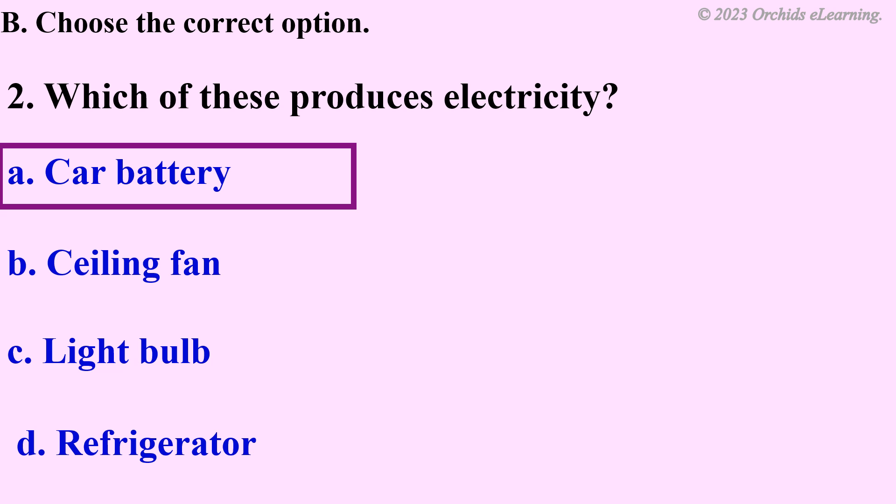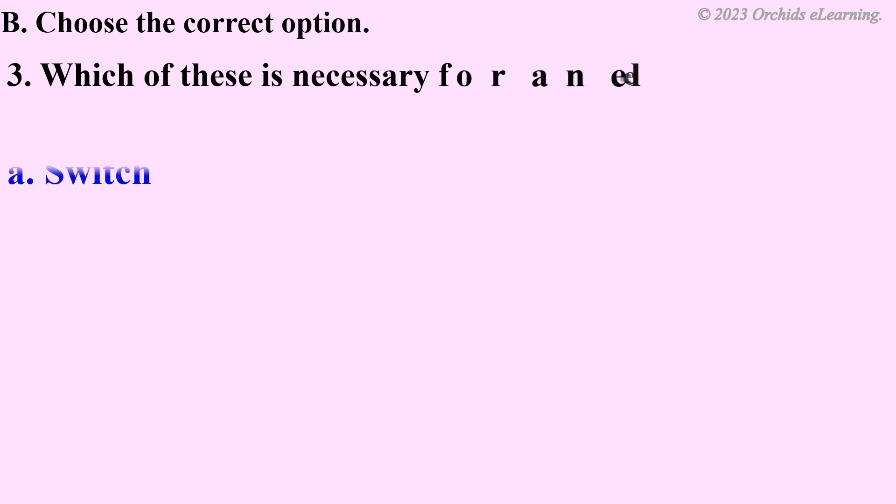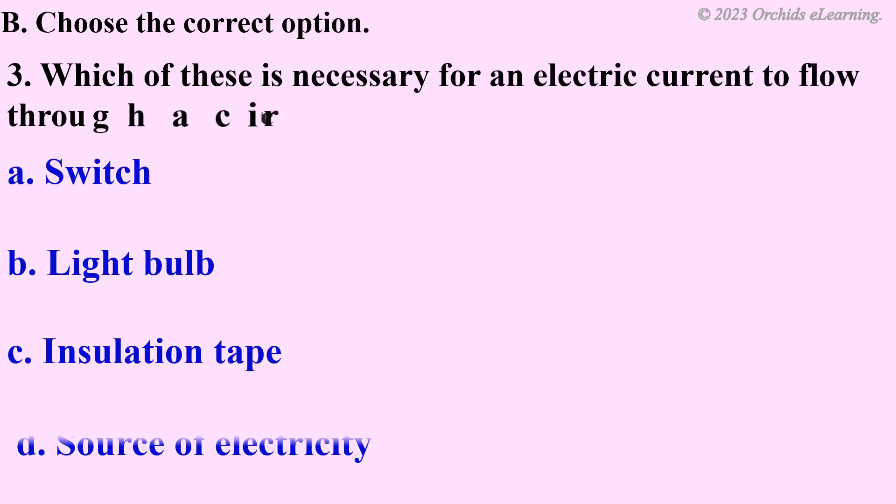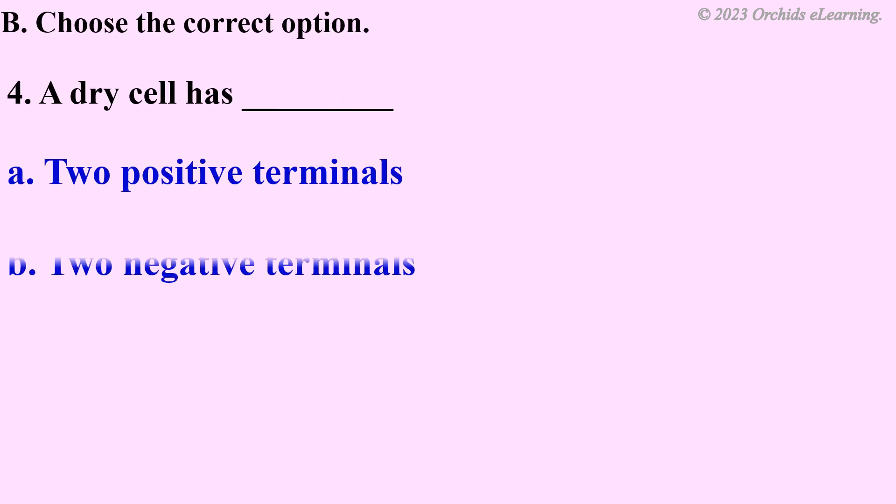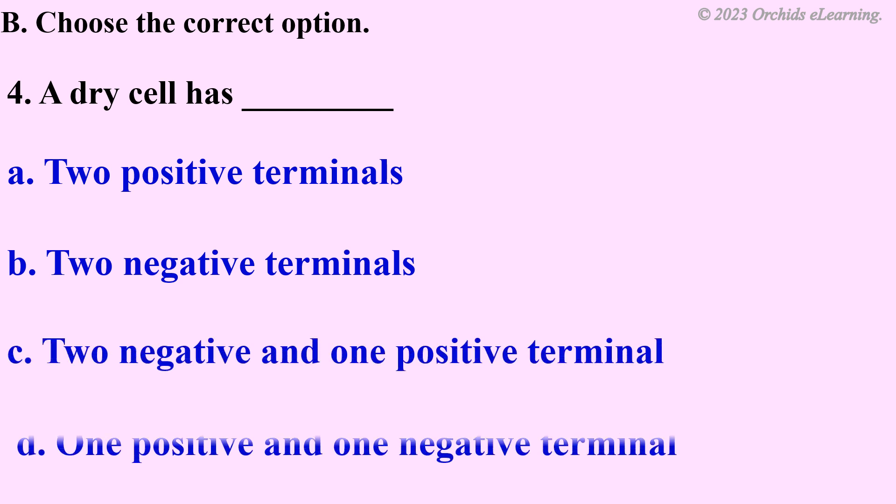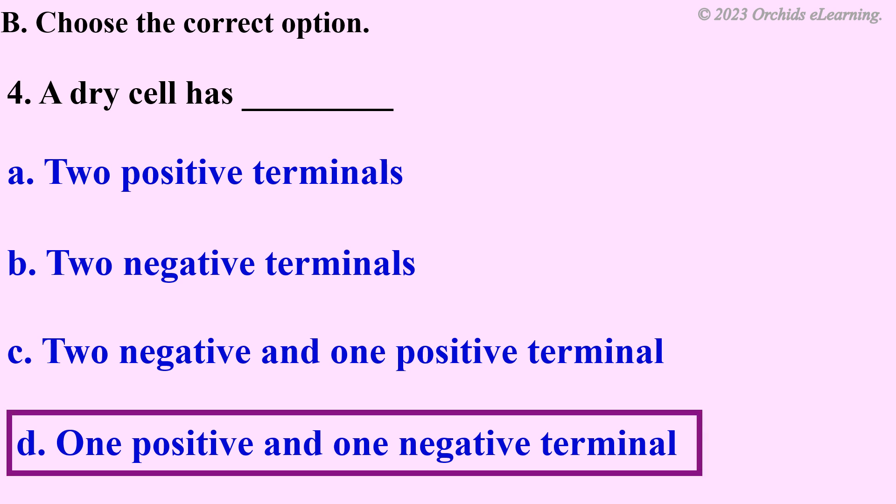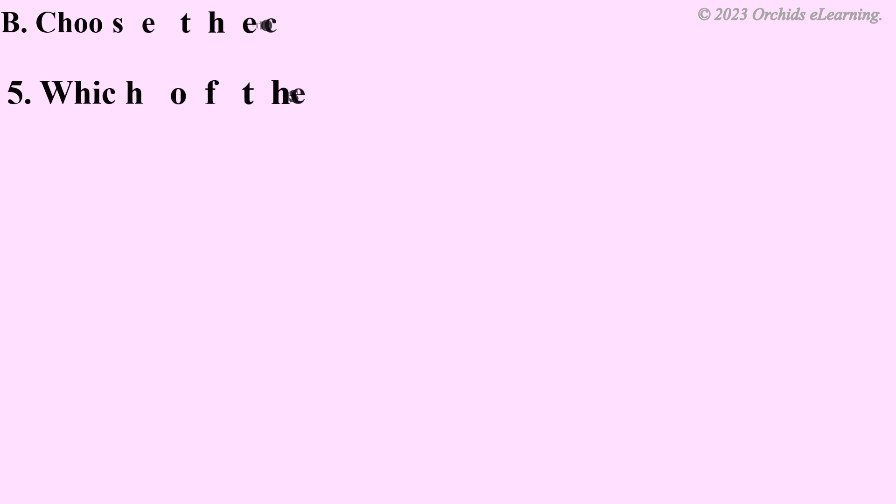Which of these produces electricity? A car battery. Which of these is necessary for an electric current to flow through a circuit? The source of electricity. A dry cell has the source of electricity and one positive and one negative terminal.